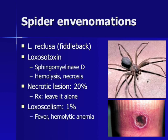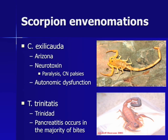A rare systemic reaction known as loxocelism can also occur, causing hemolytic anemia. A brief mention of scorpion bites: the Centruroides exilicauda scorpion found in Arizona contains a neurotoxin similar to elapid venom, and paralysis and respiratory failure can occur. The Trinitatis scorpion is associated with pancreatitis in a common mnemonic — 80% of bites from this scorpion cause pancreatitis — and it is only found on the island of Trinidad.